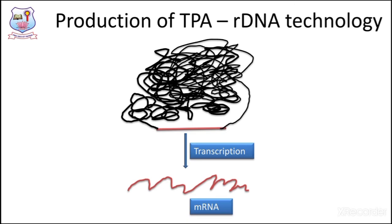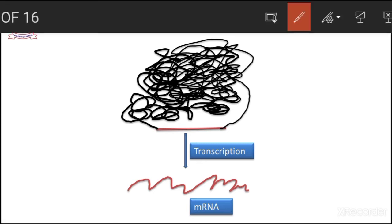So how can we produce tissue plasminogen activator in industry? This particular protein is produced with the help of a technology called R-DNA technology — recombinant DNA technology. The DNA sequence in the chromosomes undergoes two important processes: transcription and translation. As a result of transcription, the gene for TPA — the DNA for tissue plasminogen activator — is copied into mRNA.